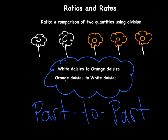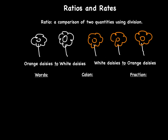Let me show you how you can write these ratios. There are three different ways: we can write them as words, with a colon, or as a fraction. In words, if we're going to do orange daisies to white daisies, I have three orange daisies, so I would write 'three orange daisies to two white daisies.'